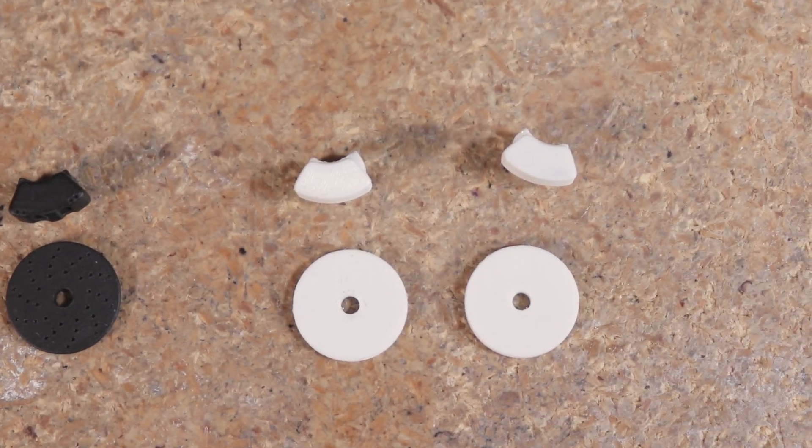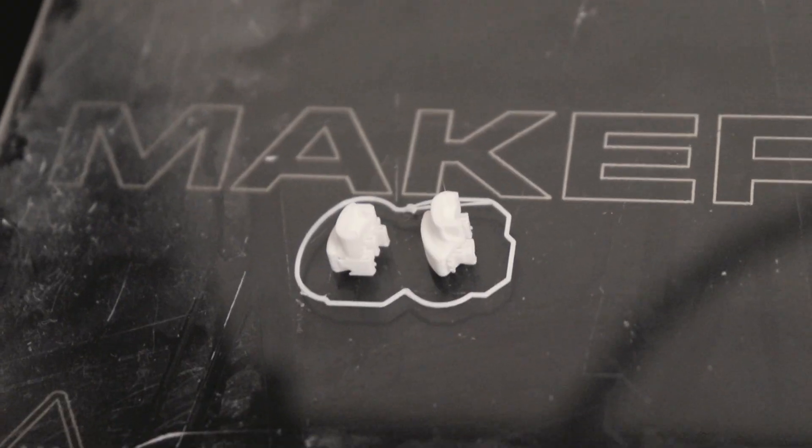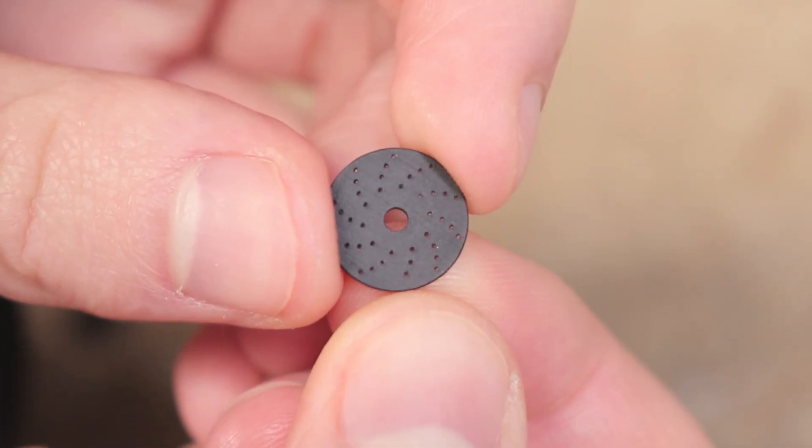The basic parts are best for FDM printing while the detailed parts would be best printed on an SLA printer.